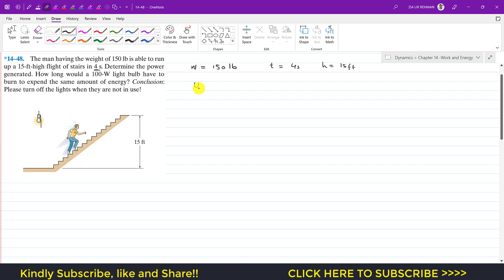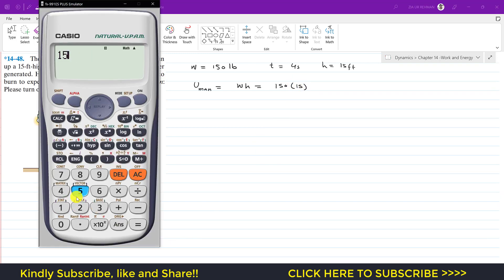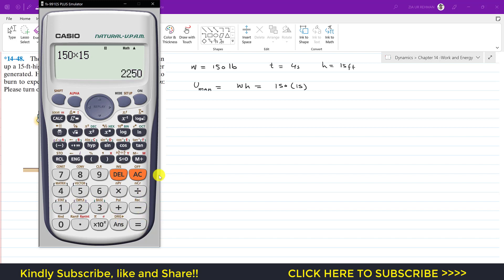Now we can say that the work done by the man will be equal to the weight times h, that's the change in the vertical position. So that is 150 into h which is 15, so 150 multiply by 15, this gives us 2250 pound-feet.